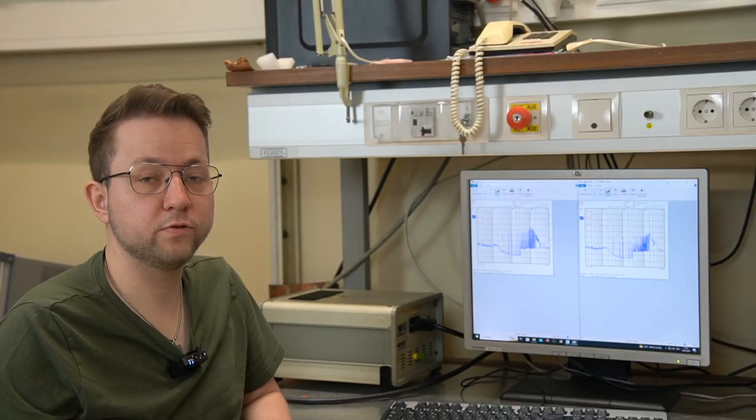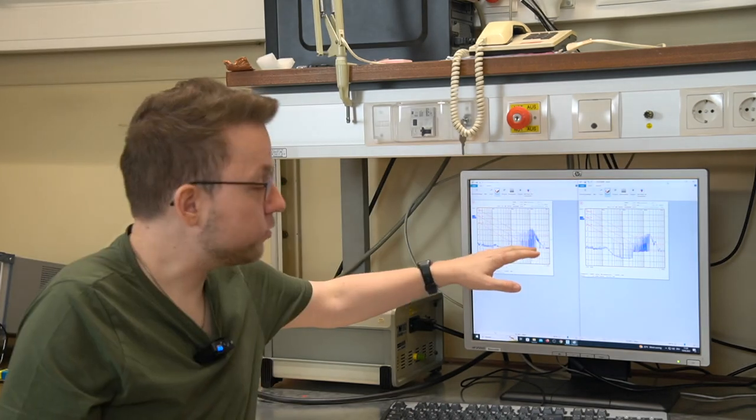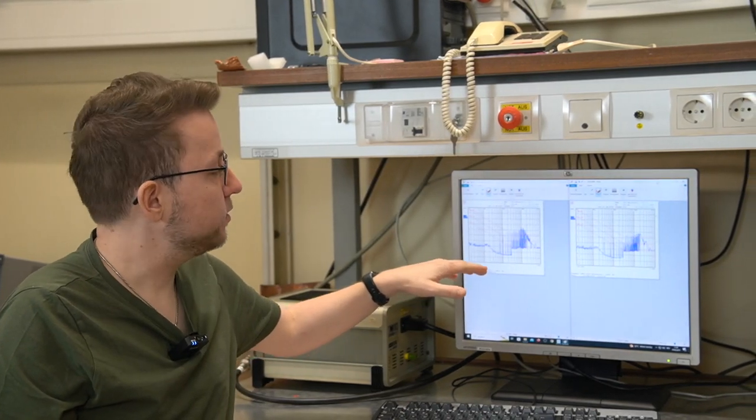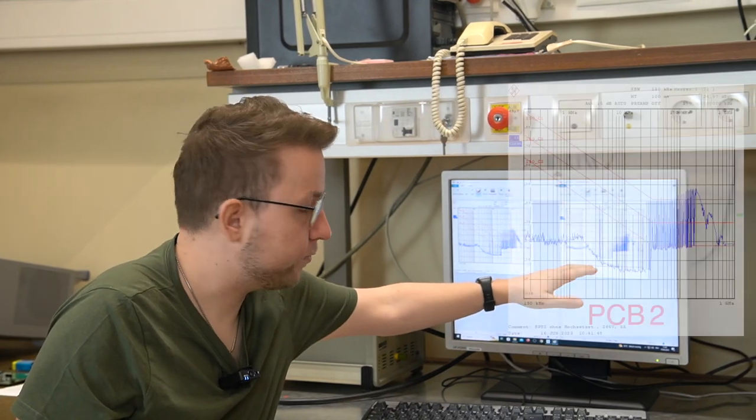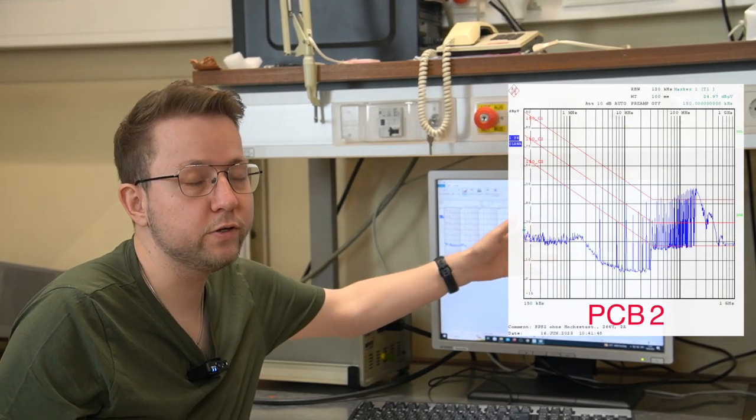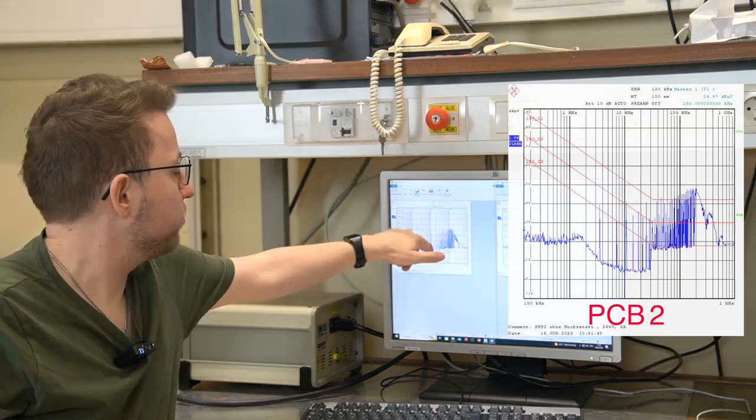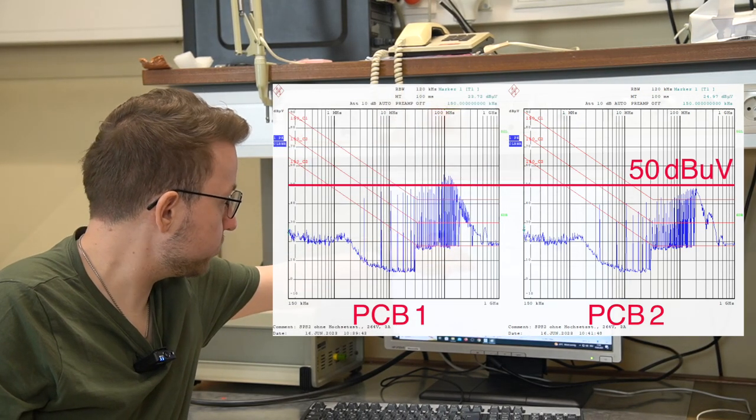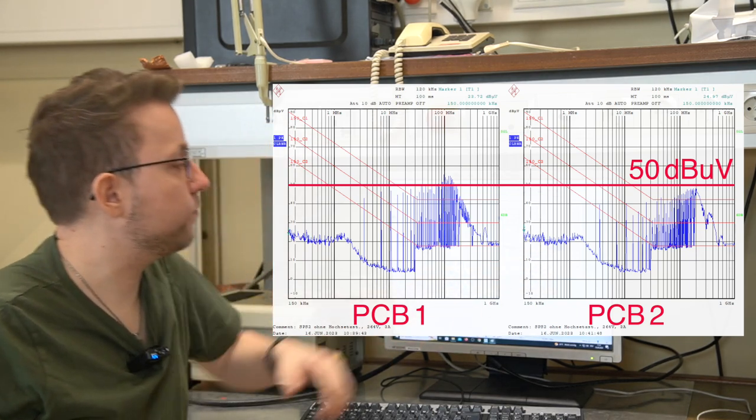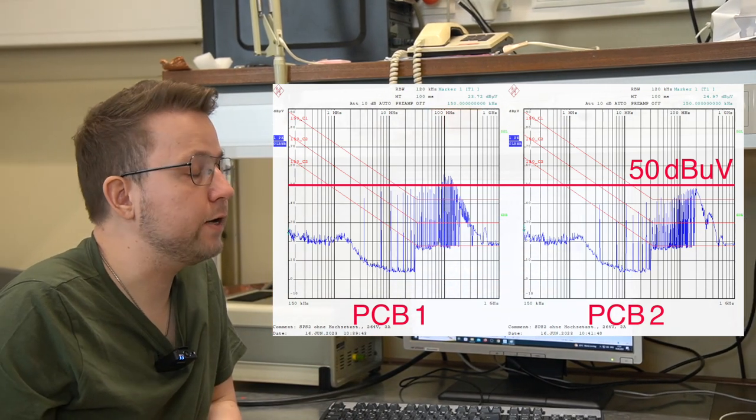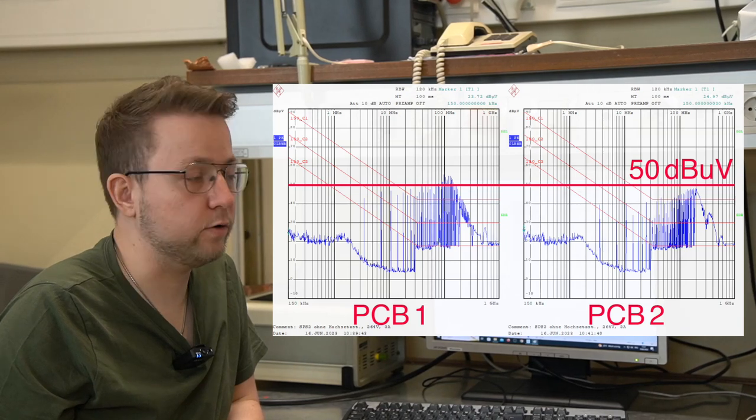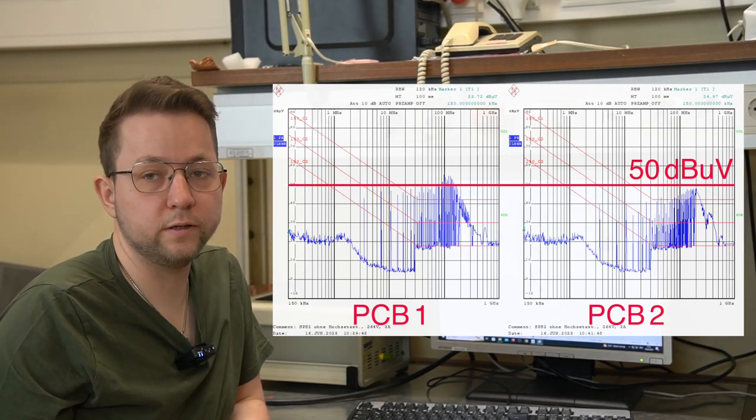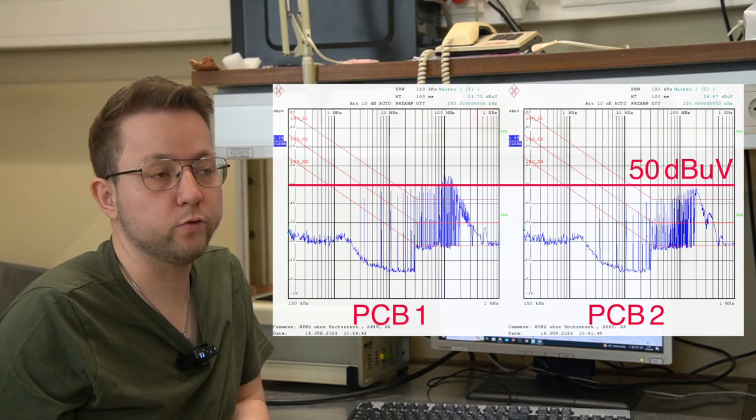So our first improvement is reducing the open loop area. Although it seems a little bit counterintuitive on first glance, on the right side where we have reduced the open loop area before it was over five dB microvolts and now we have constantly below five dB microvolts. So this is not the greatest improvement but it's still very useful.